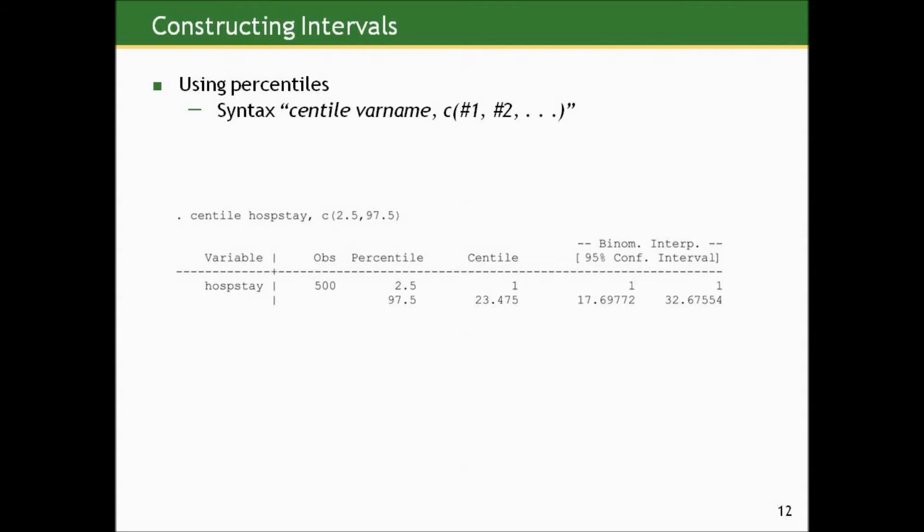Think of it this way. The 2.5th percentile is the value in our sample which is greater than 2.5% of the data and less than the remaining 97.5. And the 97.5th percentile is the converse. It's greater than 97.5% of the data and less than 2.5% of the data. So together, the 2.5th percentile and the 97.5th percentile, between them, they cut off the middle 95%.